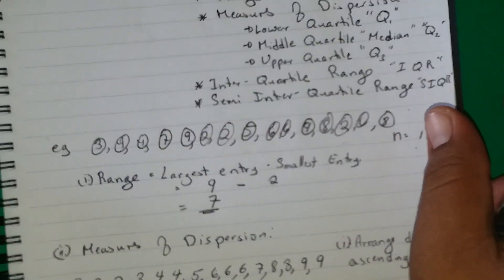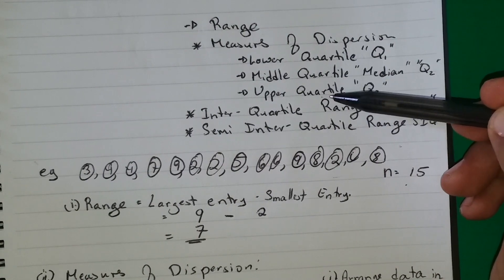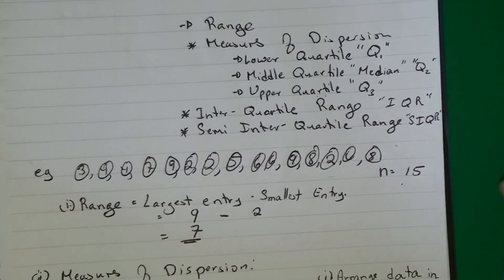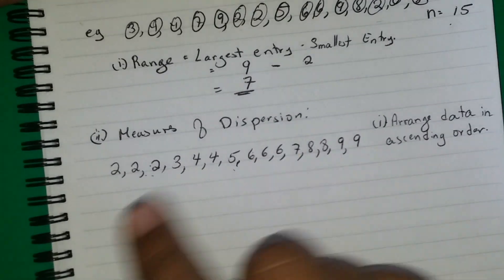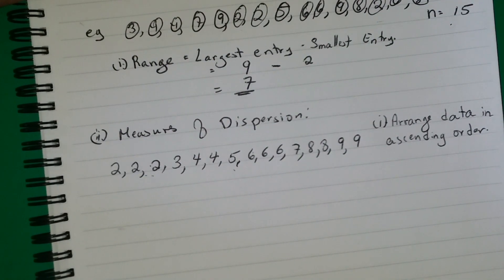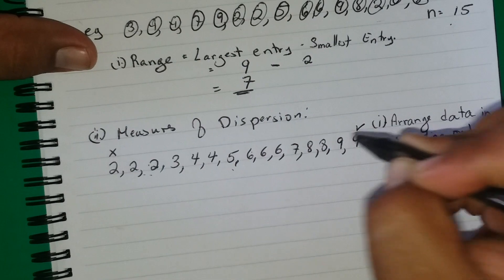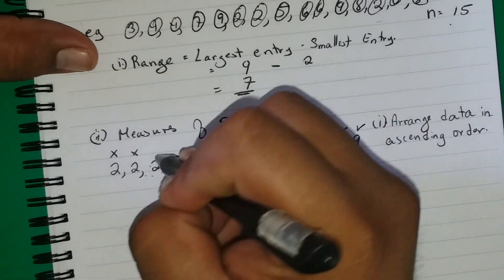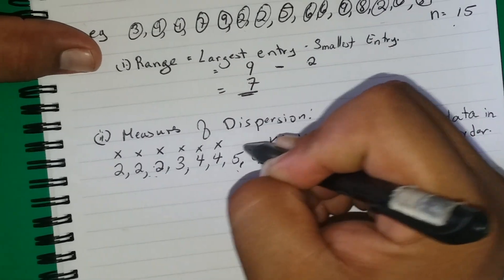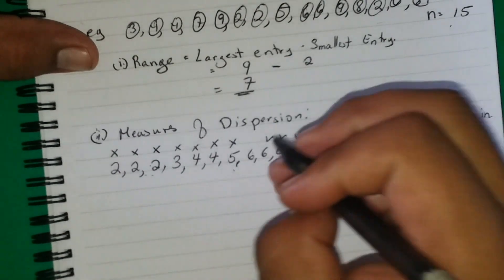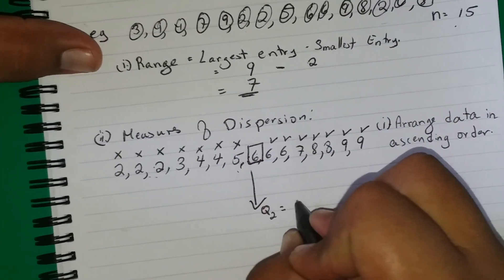For the measures of dispersion we have Q1, Q2, and Q3 — lower, middle, and upper quartile. We start by finding Q2, the middle quartile, which is easiest. We remove one number from the left and one from the right, continuing all the way until we reach the middle. Doing this, we end up with the number 6, so Q2 equals 6.